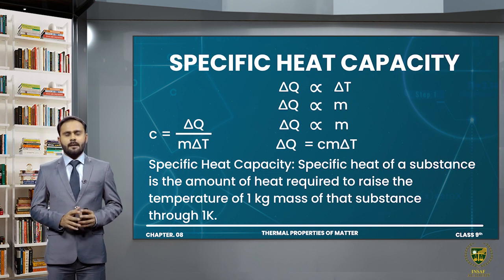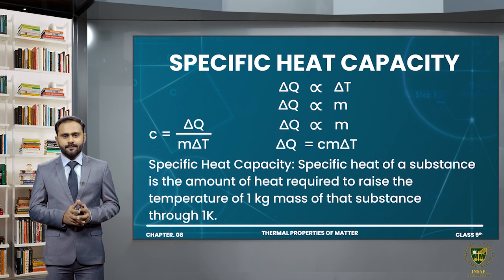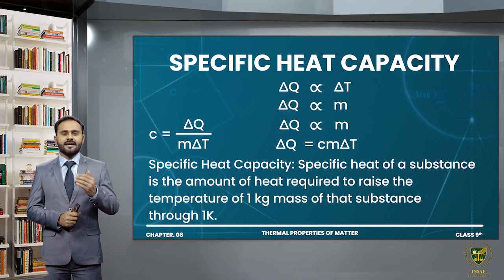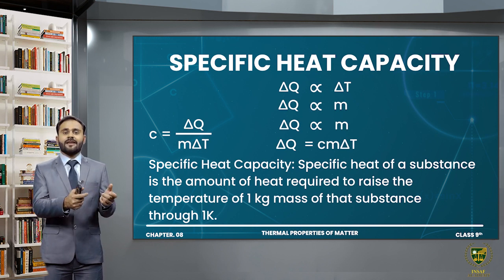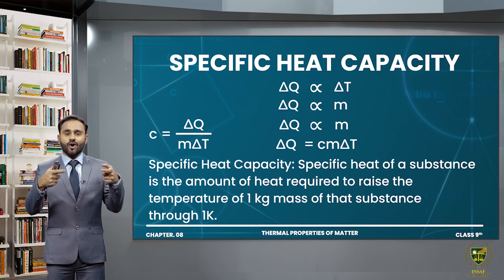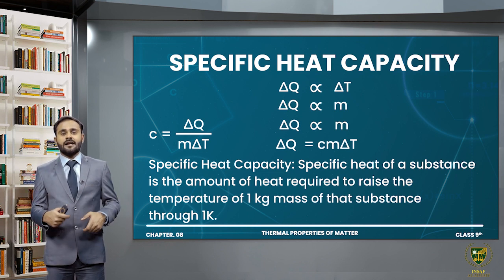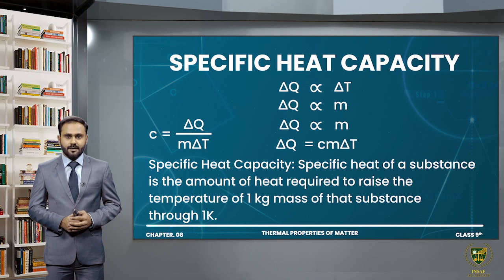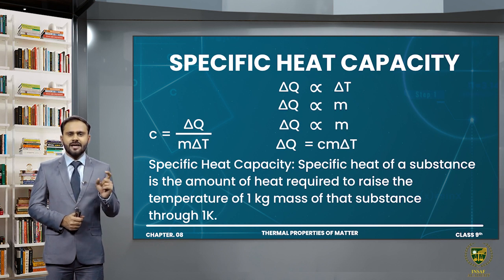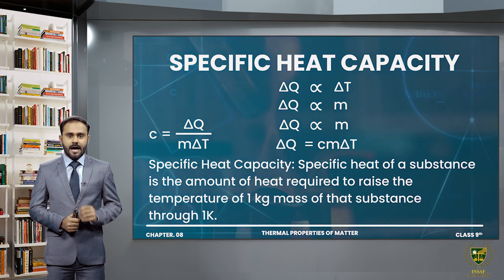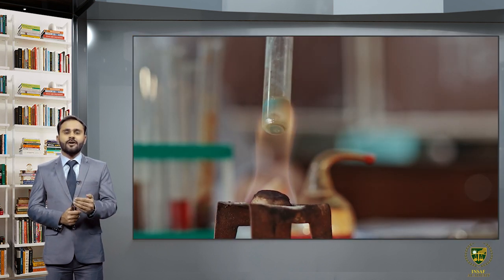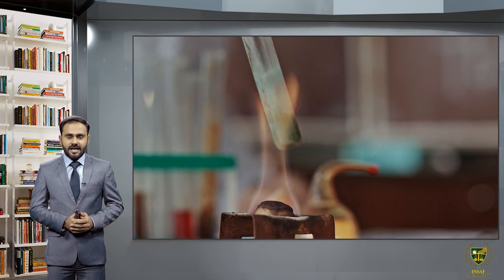Let's suppose ke aapke paas koi mass maujood hai, toh jab bhi aap us cheez ko heat up karte hain, toh uska temperature increase karta hai. Jab bhi aap kisi cheez ko heat provide karte hain, toh wo basically apne andar heat ko absorb karta hai aur absorb karne se uska temperature increase ho jaata hai. That means delta Q is directly proportional to delta T — jitni heat use dete jaenge, utna uska temperature increase karta jaega. So they are directly proportional to each other.